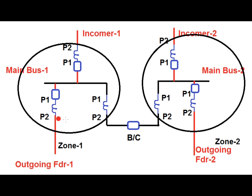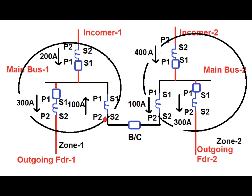There exist two zones: zone 1 or zone A covers the main bus 1 section, and zone 2 or zone B covers the main bus 2 section, each covering both ends of the bus coupler breaker. If a fault occurs at main bus 1, it is detected under zone 1 or zone A, which will trip all breakers connected to the main bus 1 section — including the bus coupler breaker — thereby isolating the faulty section.